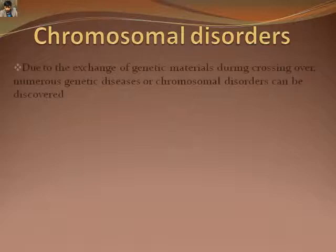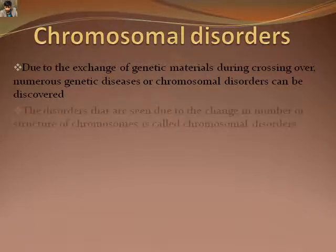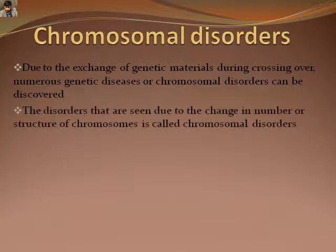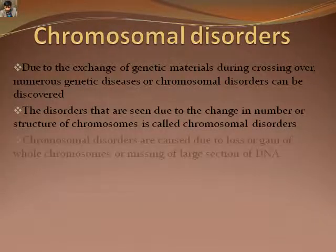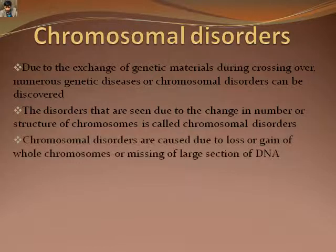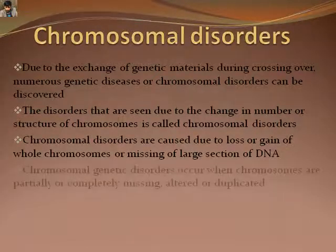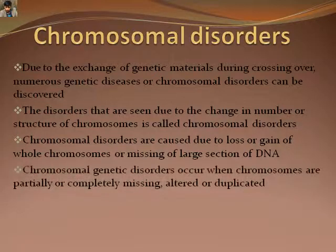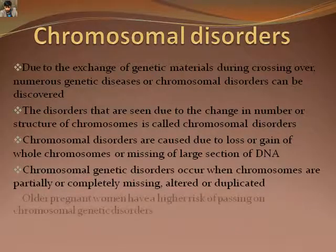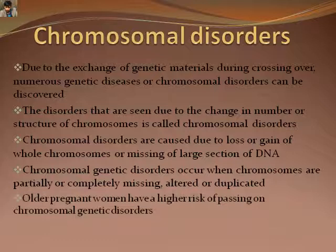The exchange of genes between chromosomes takes place during crossing over. At this process, numerous disorders of chromosomes can be observed. Chromosomal disorders are likely to occur due to the loss or gain of chromosomes, or even the missing of a large part of DNA. Many chromosomal disorders have been found in offspring given birth by an older mother.